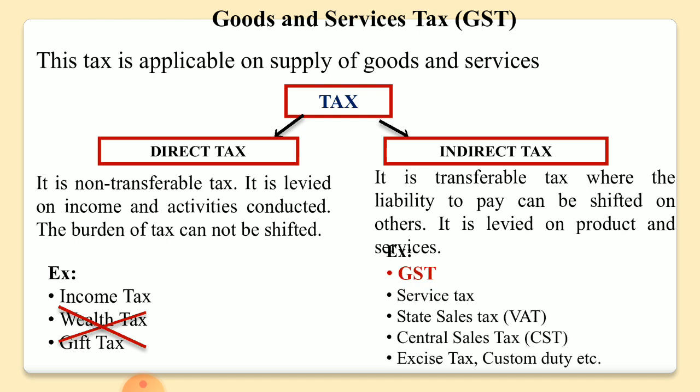GST is an indirect tax. Before GST, we had service tax, VAT, CST, excise, and custom duty. Service tax was the tax that we paid on services like electricity, water, telecom, and restaurant services. VAT and CST were levied on the sale of goods. Excise duty was levied on manufacturing within the country. Custom duty was levied on import and export. But now all these taxes have been removed and combined into one tax — GST.